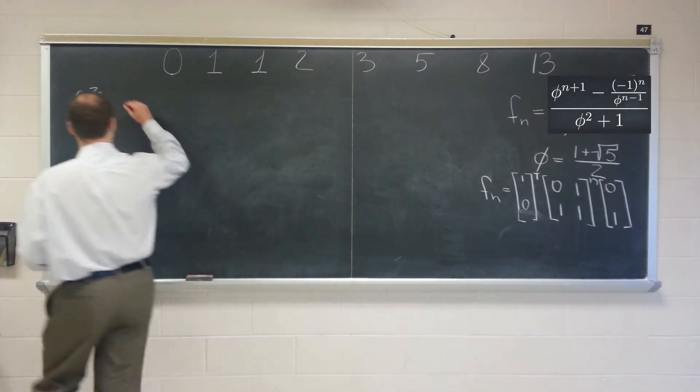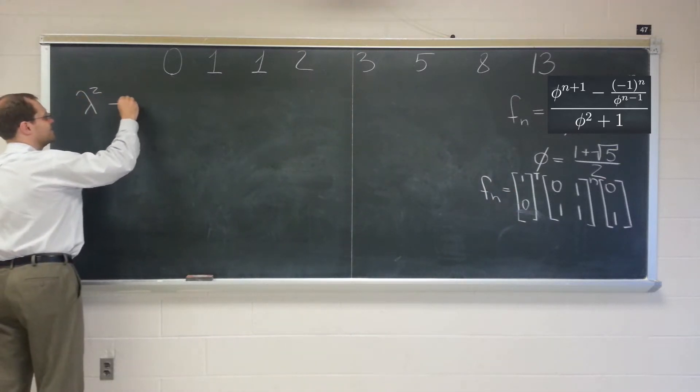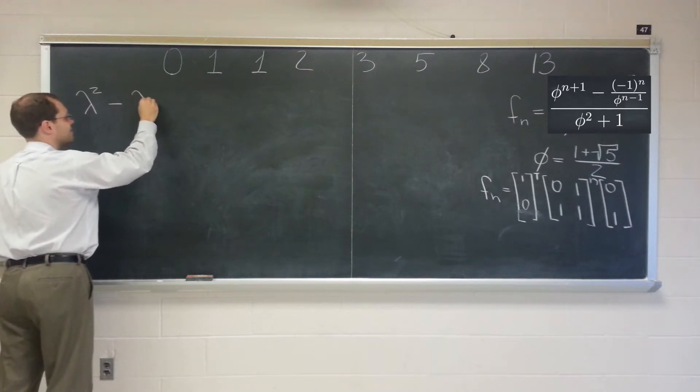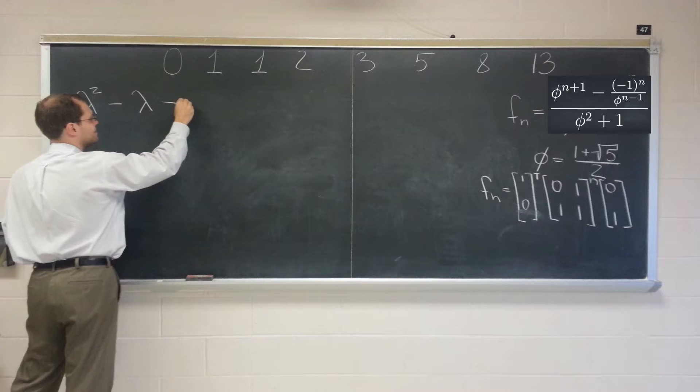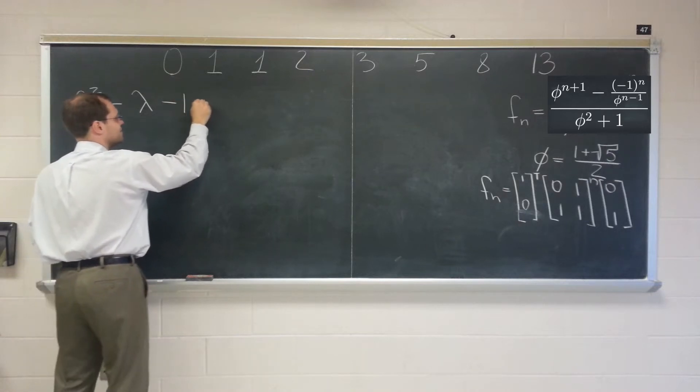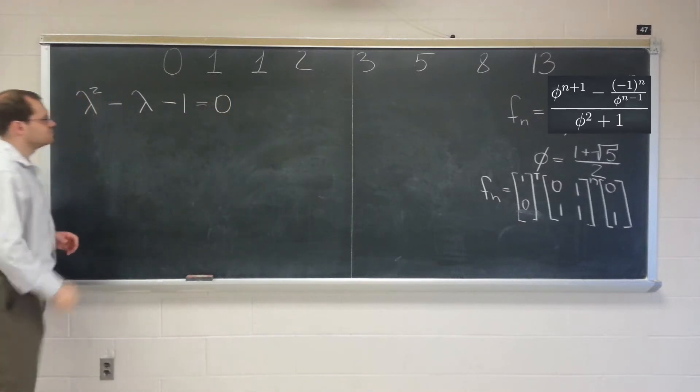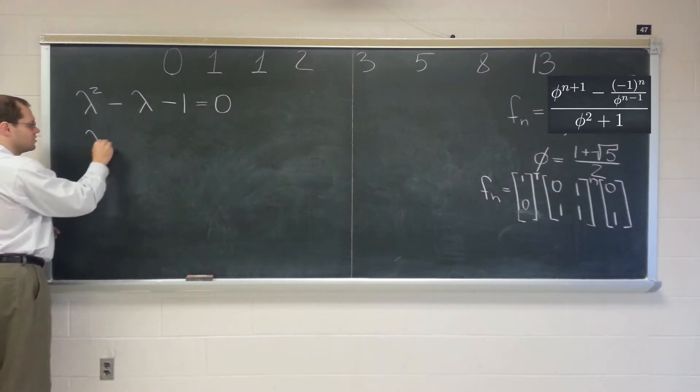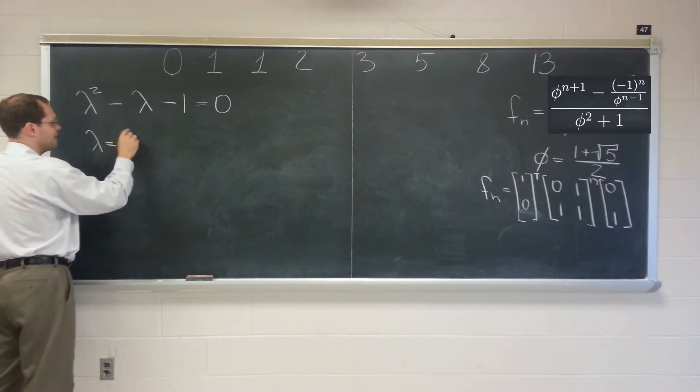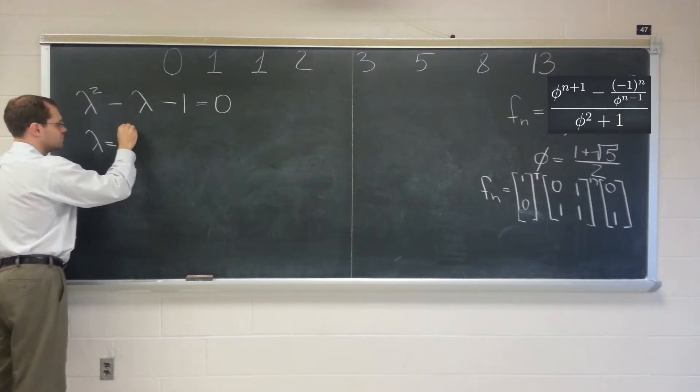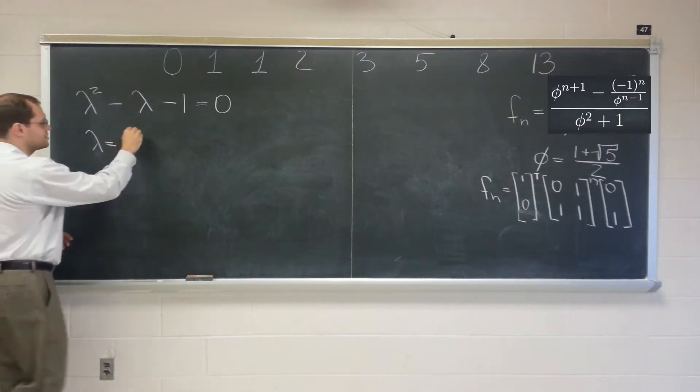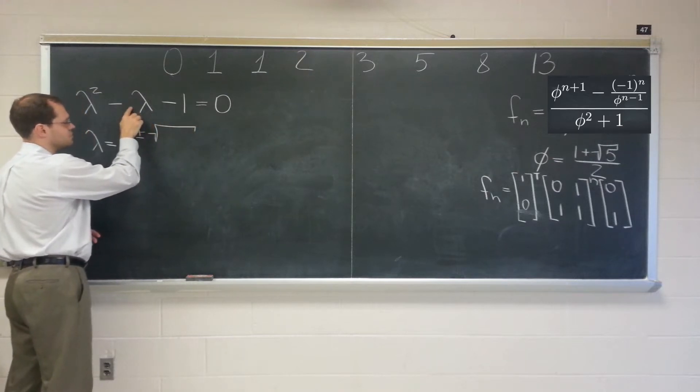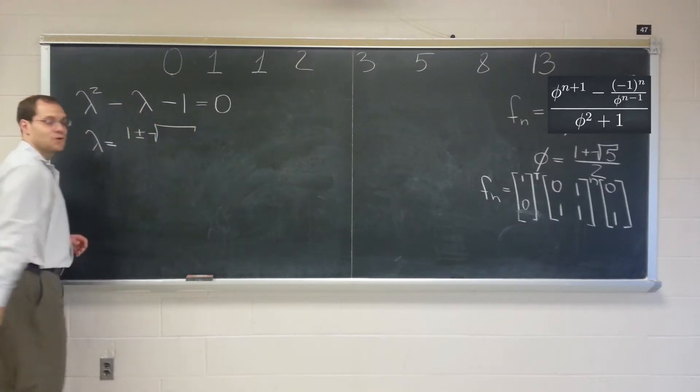So the characteristic equation is that lambda squared minus the sum of the eigenvalues times lambda minus the product of the eigenvalues equals 0.